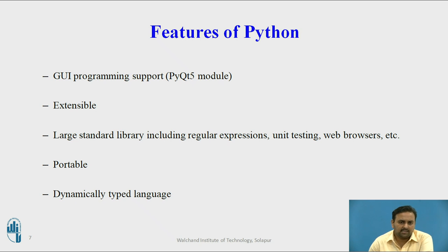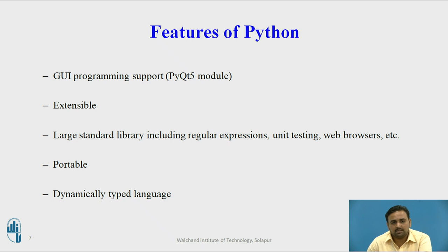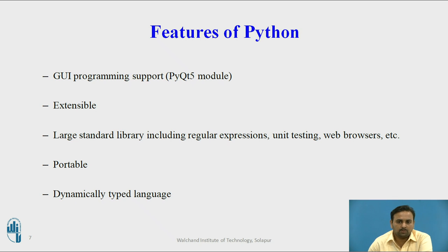If you want to add any additional input, it is acceptable. Like Java, Python is also portable — it can work on any platform because of its virtual machine, similar to JVM. Here, the Python virtual machine is there, and that's why it is totally portable. It is also a dynamically typed language — when you use variables, you do not need to mention the data type. Based on the value assigned to the variable, Python automatically understands what the data type should be.